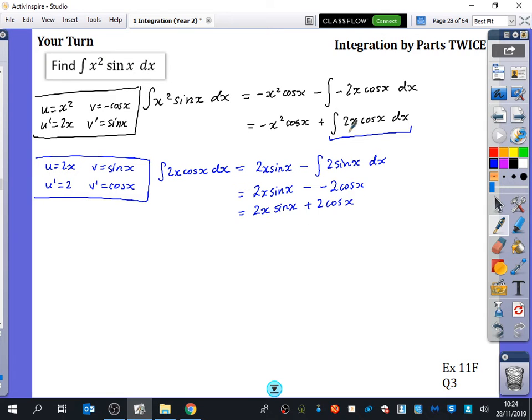Now I've got this, I'm going to put it in there. So I end up with my original question, the integral of x squared sin x dx equals the bit I worked out before, which is minus x squared cos x plus 2x sin x plus 2 cos x plus c.